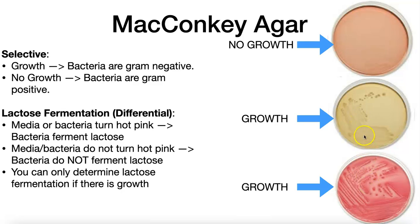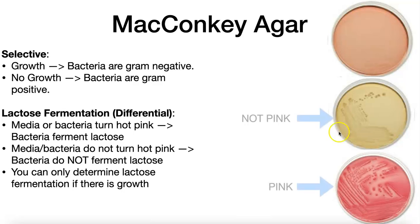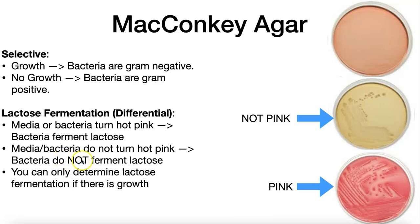When looking at the two bacteria that have grown, you can see different colors — color change reactions define differential media. In this particular case, if the media turns a hot pink color, then the bacteria ferment the sugar lactose. If the media does not turn hot pink, then the bacteria do not ferment the sugar lactose. So on these two plates: both are gram-negative because there is growth. This gram-negative bacteria cannot ferment lactose because it didn't turn hot pink. This gram-negative bacteria can ferment lactose because it did turn the media hot pink.